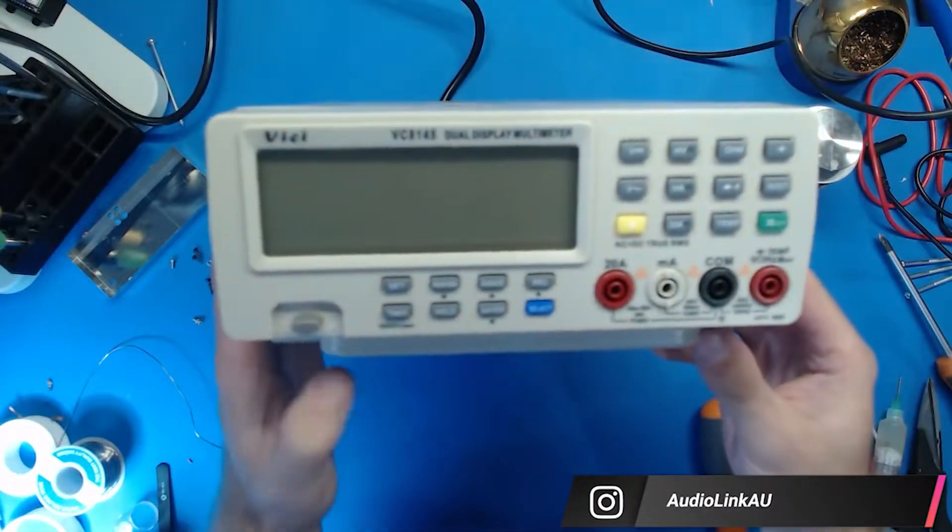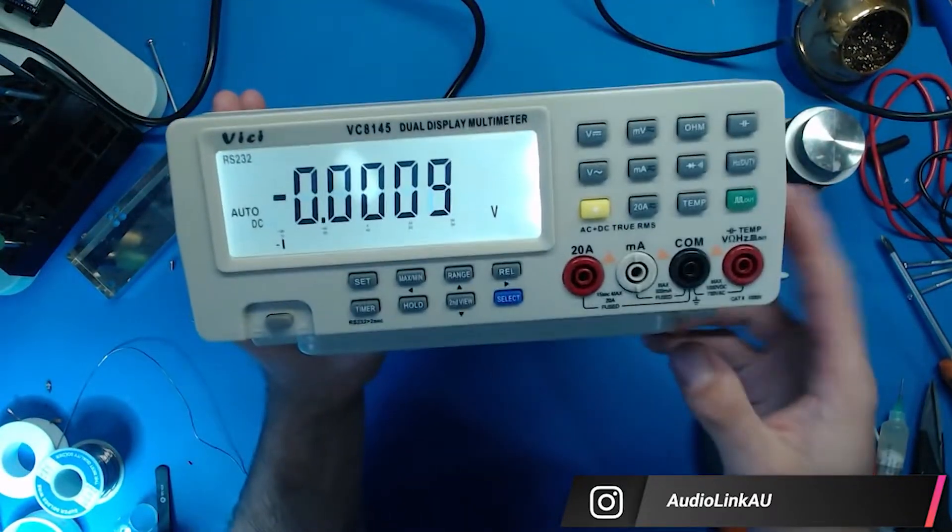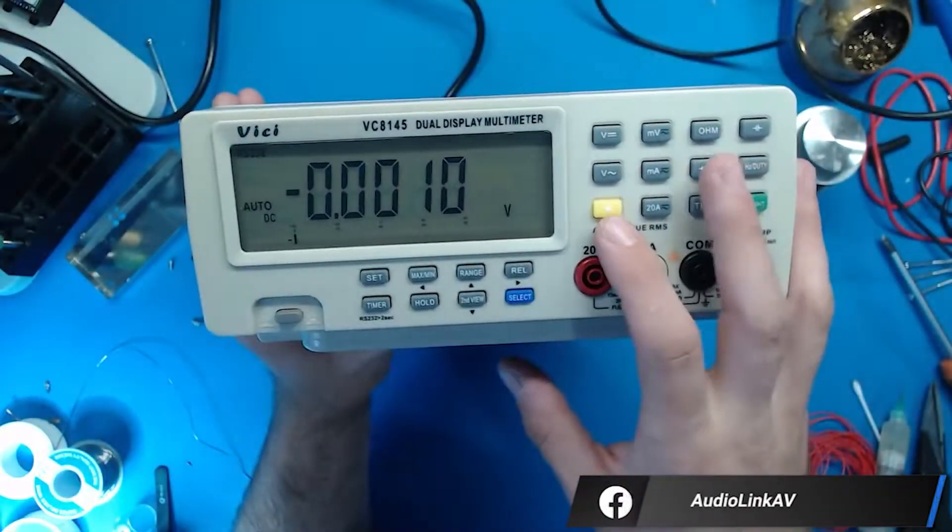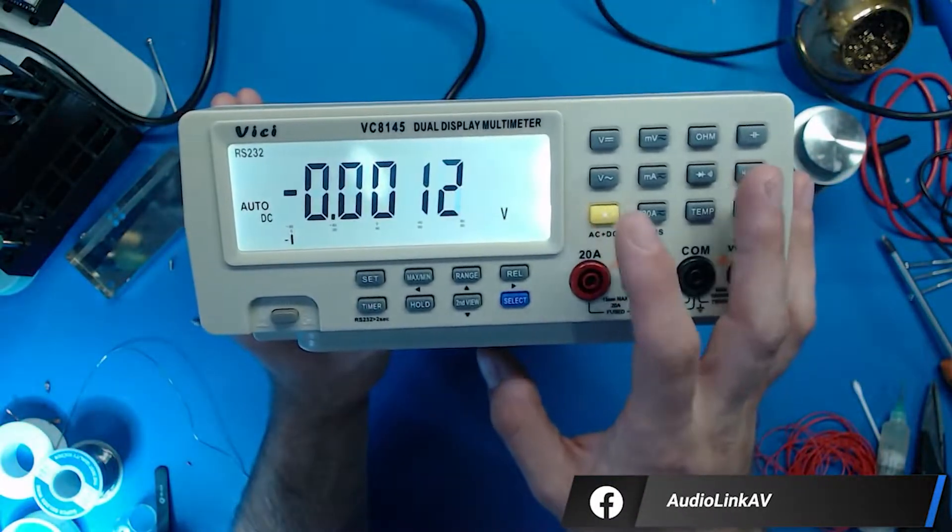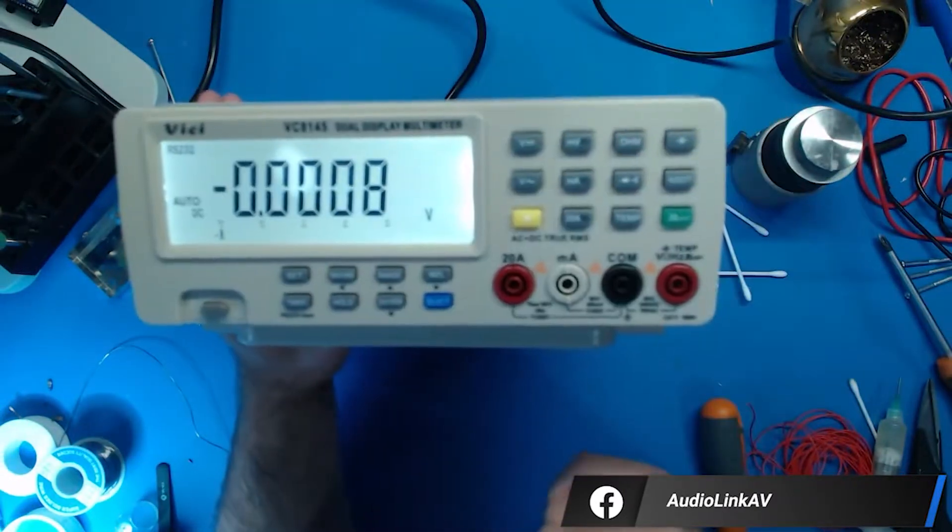Alright, let's power on the unit. So you can see here, backlight is coming straight away. Push the backlight button, you can turn it off. So that's the first mod done.